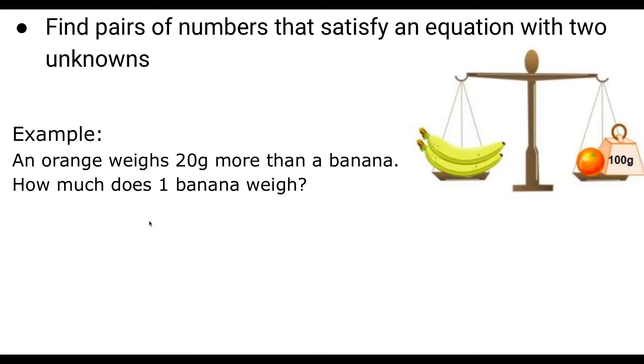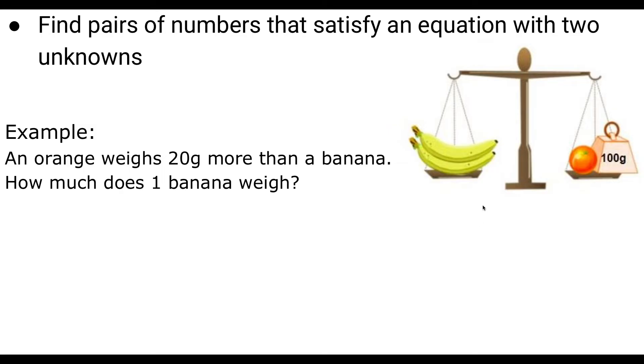The next thing you need to be able to do is, this is probably the hardest thing, is to find pairs of numbers that satisfy an equation with two unknowns. Now, I'm going to go through this example. It is quite complicated and it is quite long. So we're going to break it down and I'll give you some pointers so that if you came across a question like this, you'd know how to answer it. An orange weighs 20 grams more than a banana. How much does one banana weigh? It's showing you a scale and as you can see, it's balanced. So we have two bananas here and we have an orange and 100 grams.